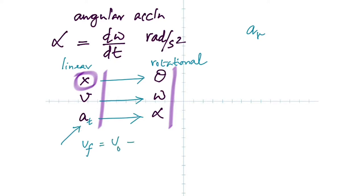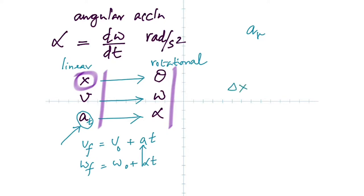Do you remember a formula like this? The corresponding rotational formula is: omega final equals omega initial plus alpha times t. Omega final is equal to omega initial plus alpha t.